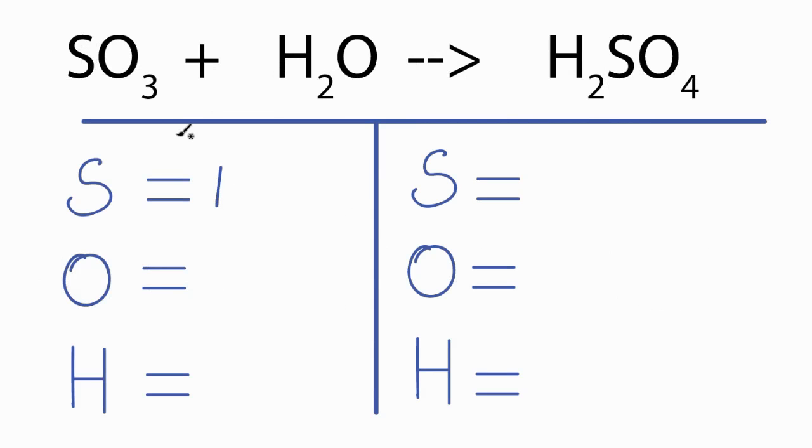We have one sulfur, we have three oxygens, but be careful, we also have an oxygen over here with the water, so we have a total of four oxygens. This is where people go wrong with this equation. And then we have two hydrogens.